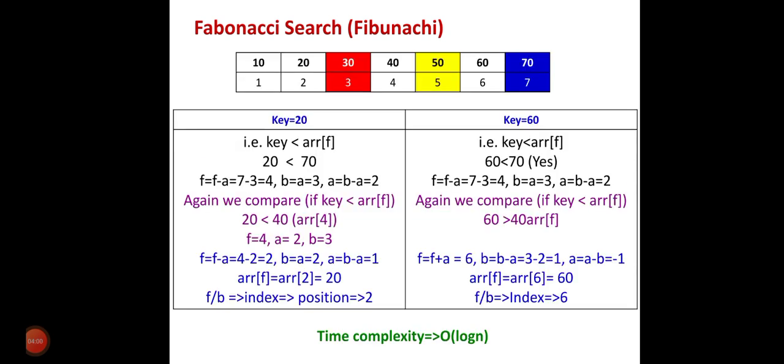Let us take one example. If the key element is 20, then 20 is compared with 70. Since 20 is less than 70, F equals F minus A: 7 minus 3 equals 4. B equals the previous value of A, so B equals 3. And A equals B minus A: 5 minus 3 equals 2. Now we compare the key element with array[F], where F equals 4, so array[4] equals 40. We compare 40 with key element 20 and repeat the procedure. Similarly, for key element 60: 60 is less than 70, so the same procedure is repeated. This is the Fibonacci search, and its time complexity is O(log n), where n is the total number of elements.